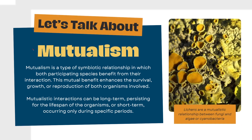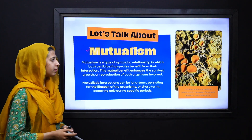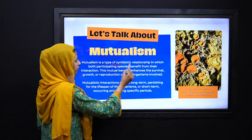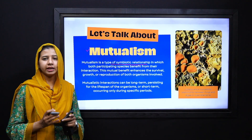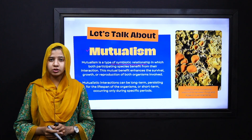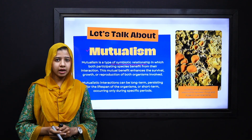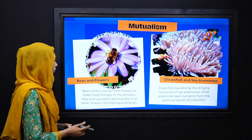Very good. Next, we move to our first type, that is mutualism. Dear students, always keep in mind that mutualism is the type of symbiotic relationship in which both partners get benefited. Let's take an example of lichens that are in a mutualistic relationship with fungi or algae — in this relation, both organisms benefit and neither is harmed.